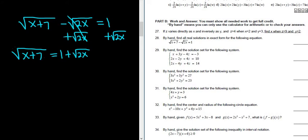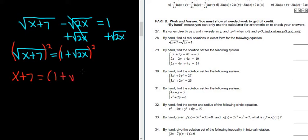Now we're in a good place — we can square both sides. When you square the left-hand side, the square root goes away, so you get x plus 7. One way to multiply out the right side is to simply write it twice: 1 plus square root of 2x, times 1 plus square root of 2x.